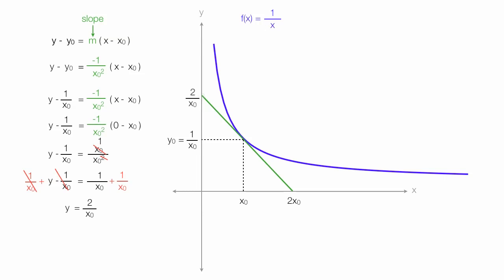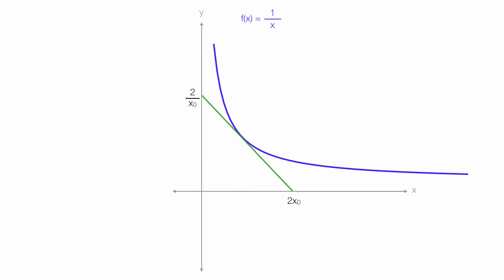Now I'll find the area of this brown triangle. And the area of any triangle is 1 half times base times height, which is 1 half times the base, which is 2x0, times the height, which is 2 over x0. I can simplify the equation: this 2 and this 2 cancel, that x0 and this x0 cancel, so this equals 2.